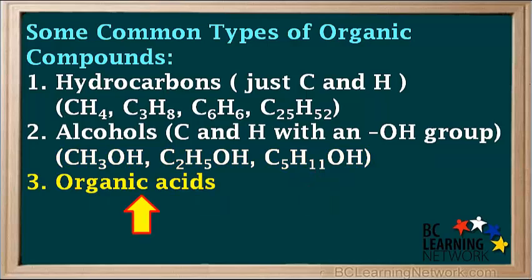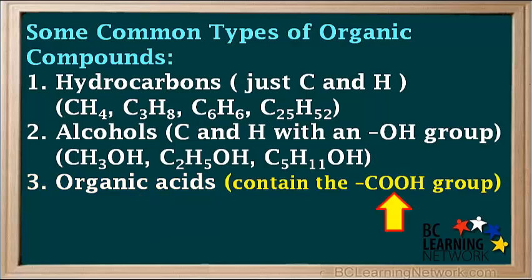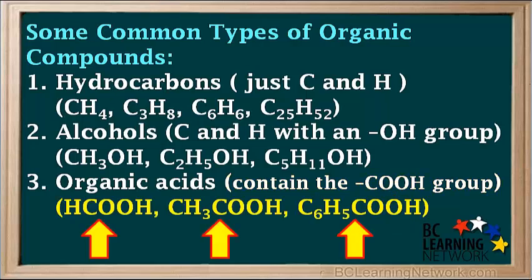A third type of organic compound is organic acids, also called carboxylic acids. Their formulas are often written in a way that shows the COOH group. Some examples are methanoic acid HCOOH, acetic acid (found in vinegar) CH3COOH, and benzoic acid C6H5COOH.